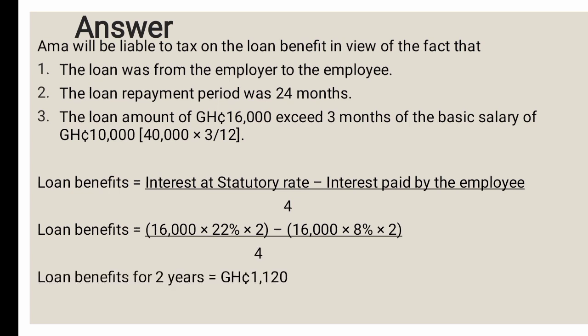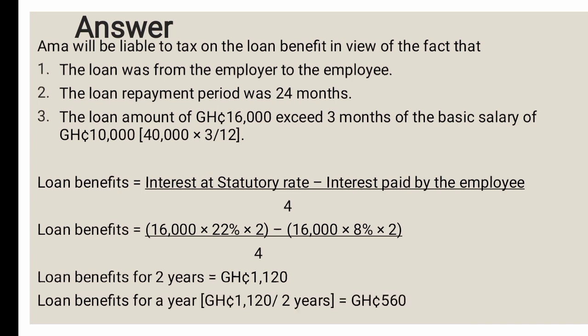The loan benefit for two years comes to GHS 1,120. Since we need the benefit for a single year of assessment, we divide by the period: GHS 1,120 ÷ 2 = GHS 560. The loan benefit is GHS 560, and this will be treated as a benefit in kind. After calculating total cash emoluments, we add this GHS 560 to it.